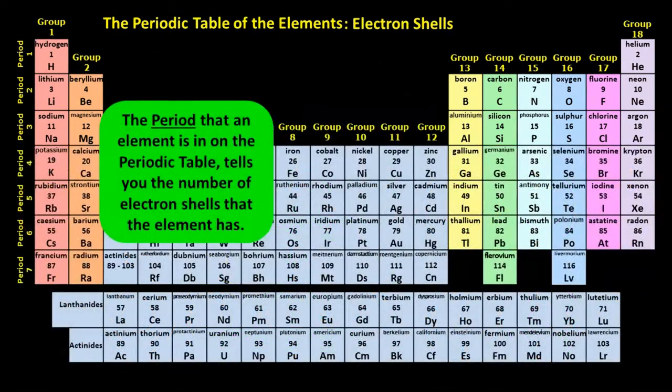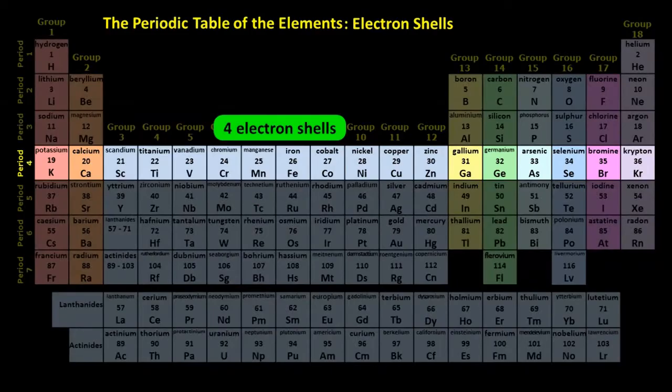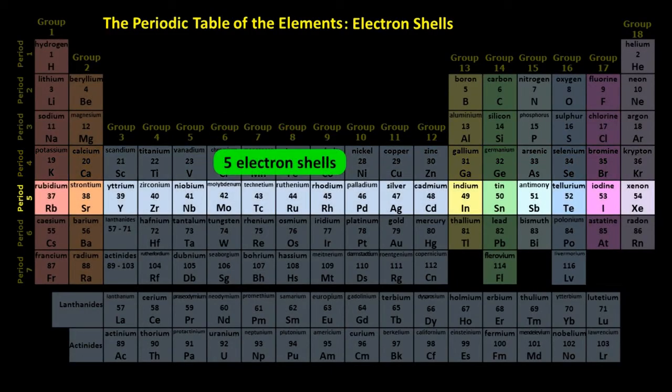The period that an element is in on the periodic table tells you the number of electron shells that the element has. All of the elements in period four have four electron shells. All of the elements in period five have five electron shells, and so on.